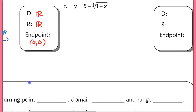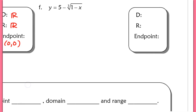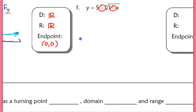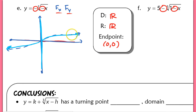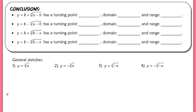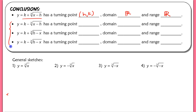Try example f on your own — you have a negative on the outside and a negative on the inside, so after two reflections you get the same mother function shape. Now let's draw some conclusions: when we see an equation of the form k plus the cube root of (x minus h), we know we'll have a turning point at (h, k). The domain and range are always all reals for cube root functions. Fill in the next three sentences on your own and check with the key.